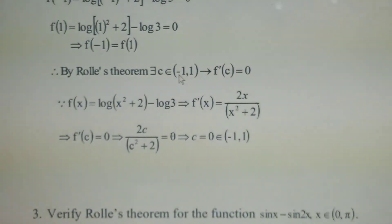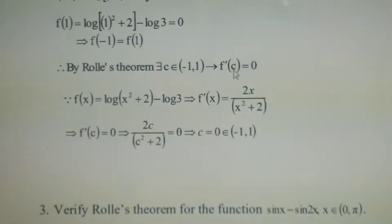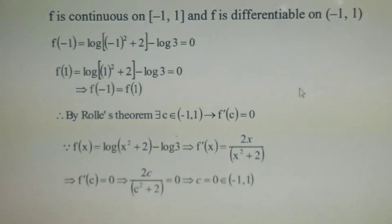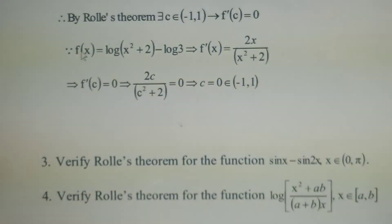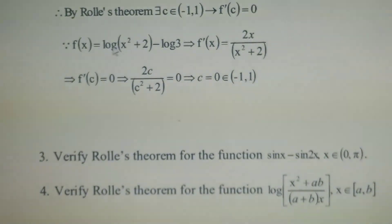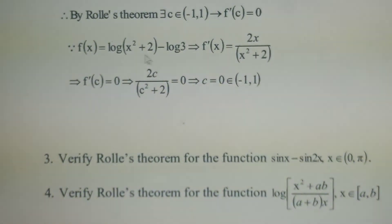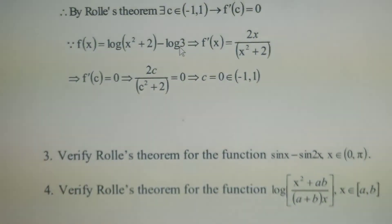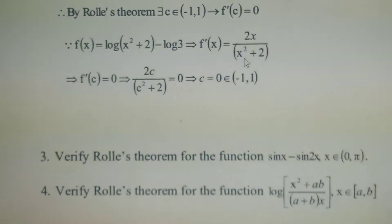By Rolle's theorem, there exists c belonging to (-1, 1) such that f'(c) = 0. We have to calculate c and check that the c value lies inside the given interval. Since f(x) = log(x² + 2) - log 3, find the derivative. The derivative of log(x² + 2): using the chain rule, it is 1/(x² + 2) times 2x. The derivative of log 3 is 0. Therefore f'(x) = 2x/(x² + 2).